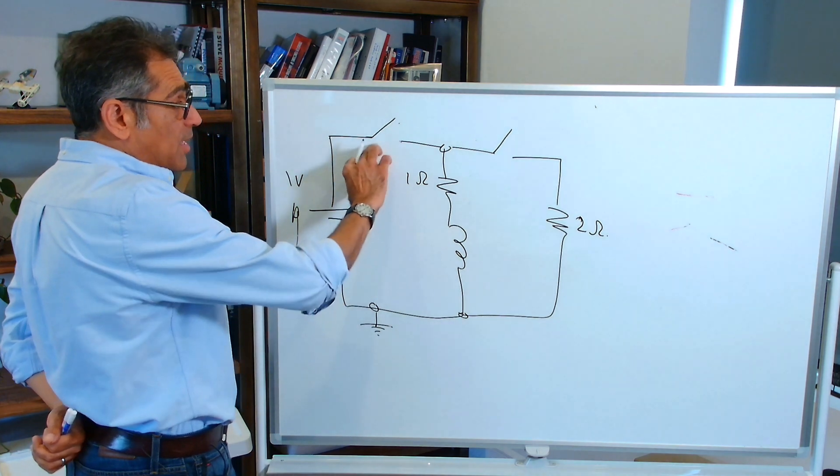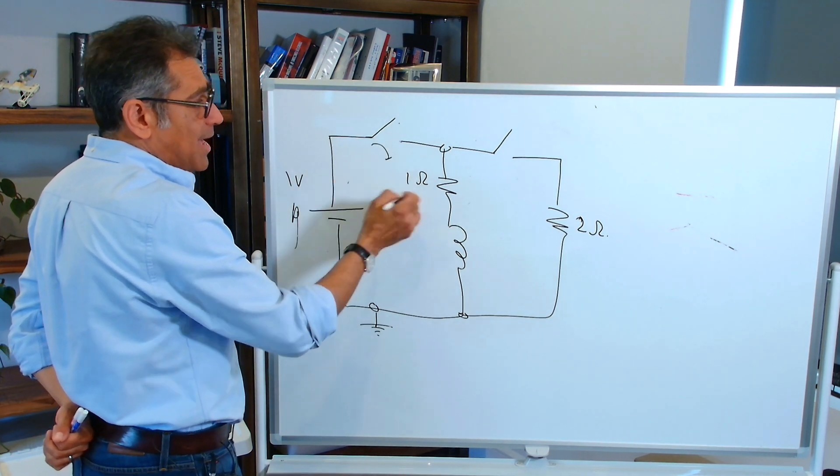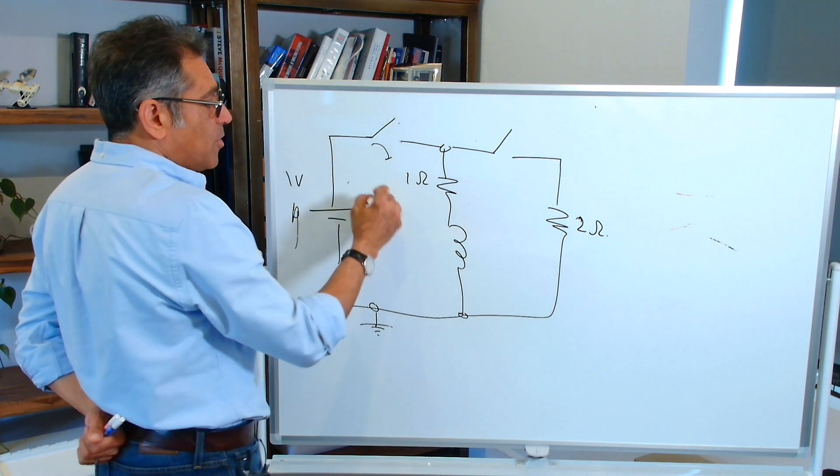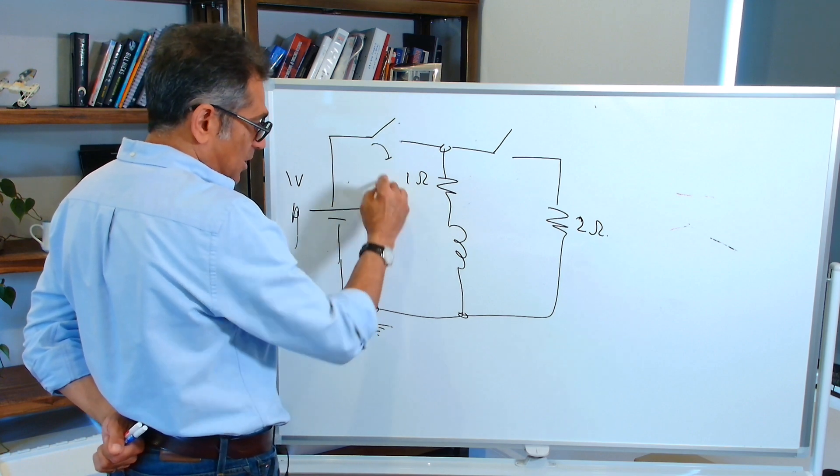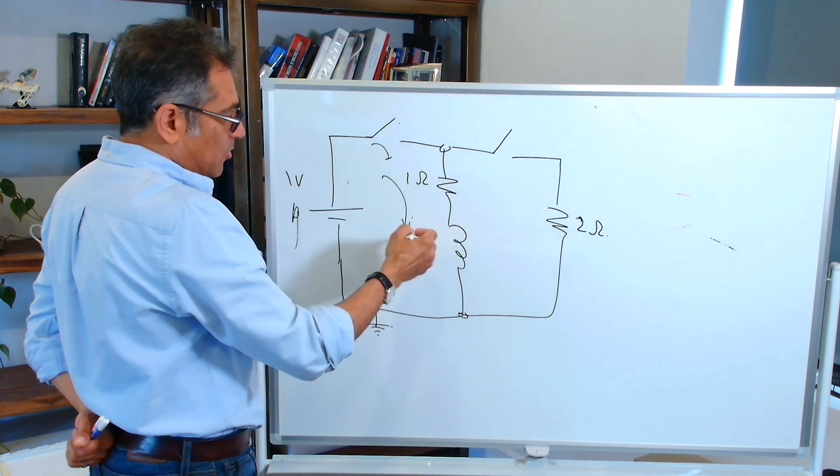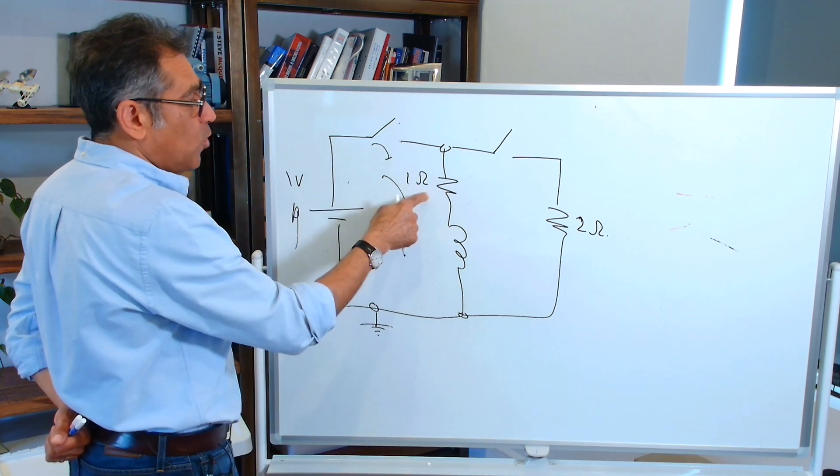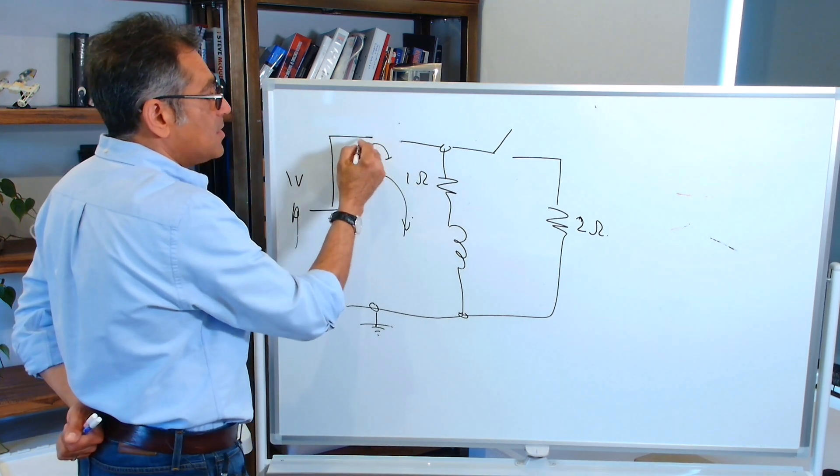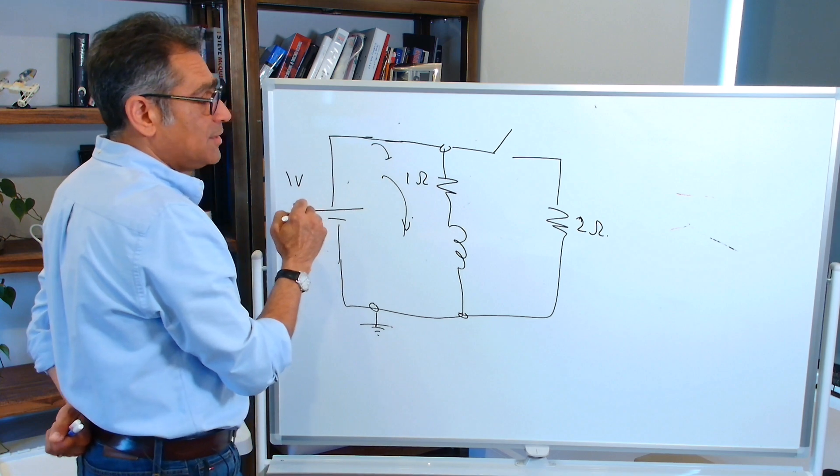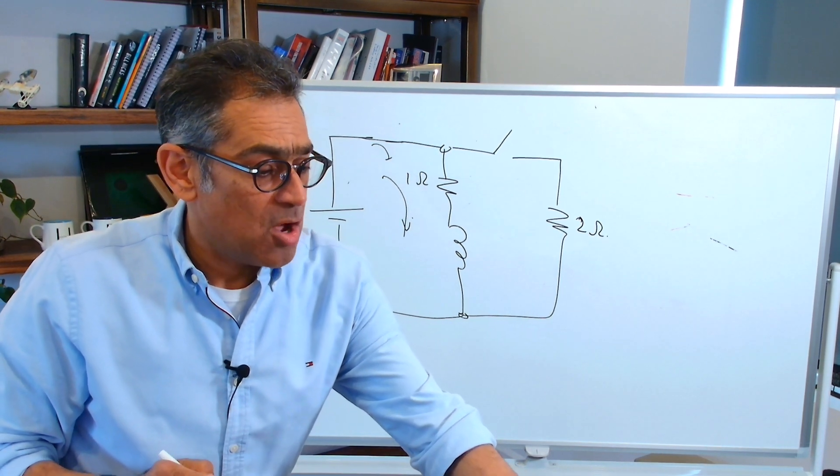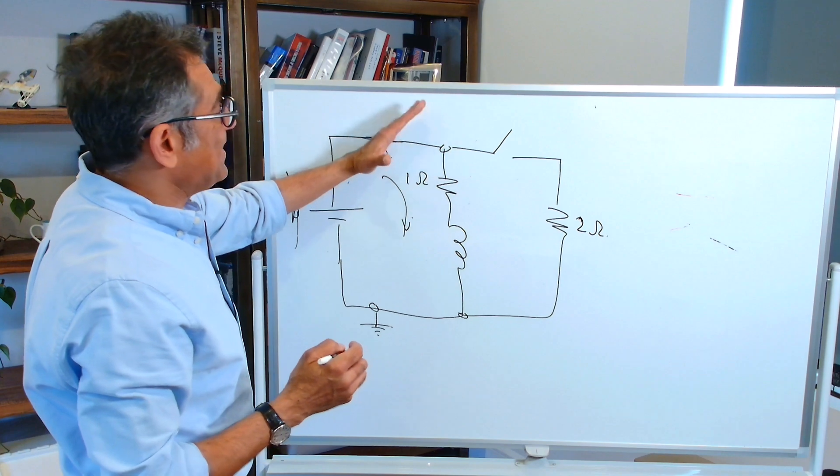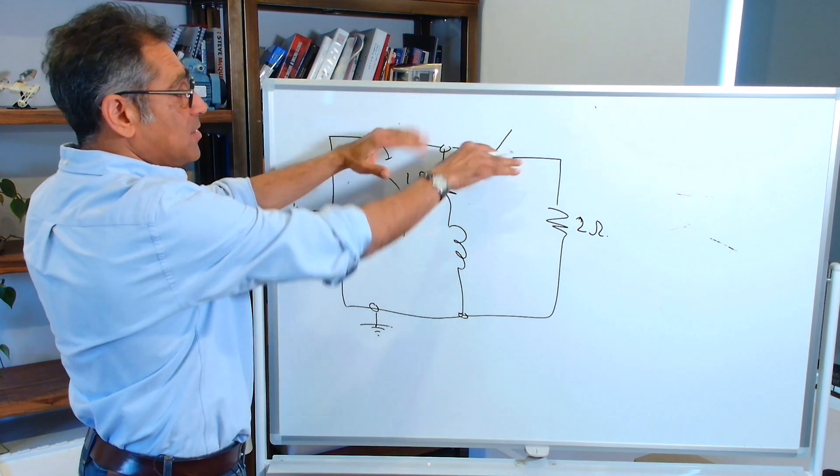Now, initially, I close this switch. As we discussed, the current will rise to around one amp. So the current at the end of the time, several time constants, is around one amp, because that's one volt and one ohm. And this is closed.